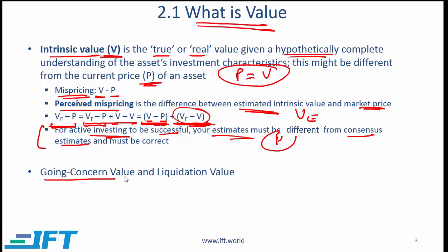The next major point is the distinction between going concern value and liquidation value. When you value a security, you make an assumption that the company is going to go on forever — even accounting numbers are based on going concern value. Liquidation value is where you liquidate the assets, settle the liabilities, and what remains is the liquidation value. If you are evaluating distressed securities — companies that are likely to be liquidated — it makes sense to use liquidation value. Going concern value is used when valuing a regular company expected to operate for a long time.